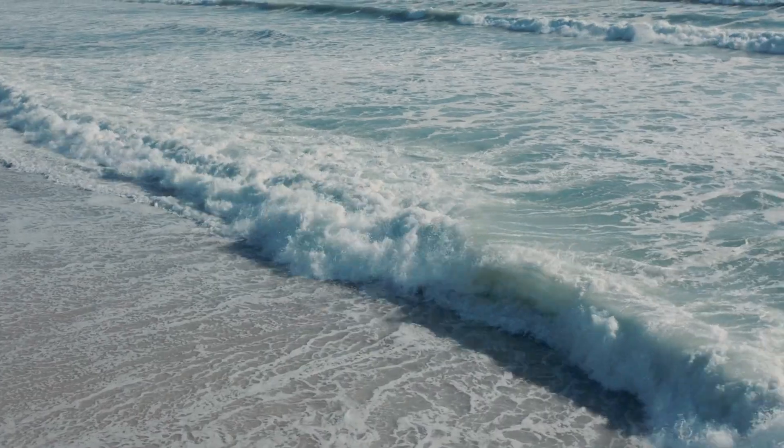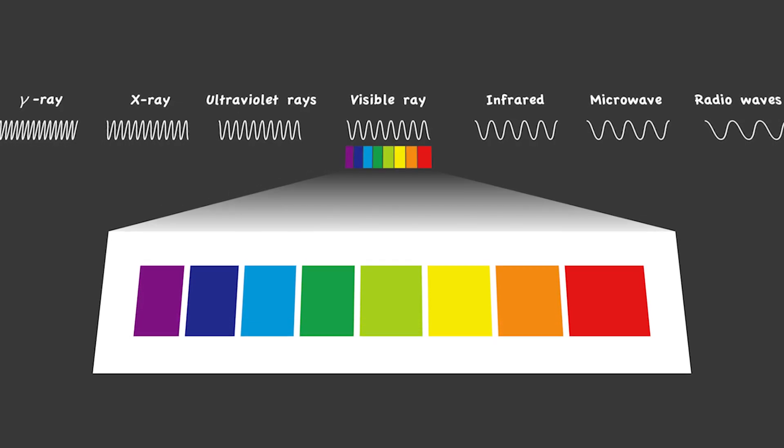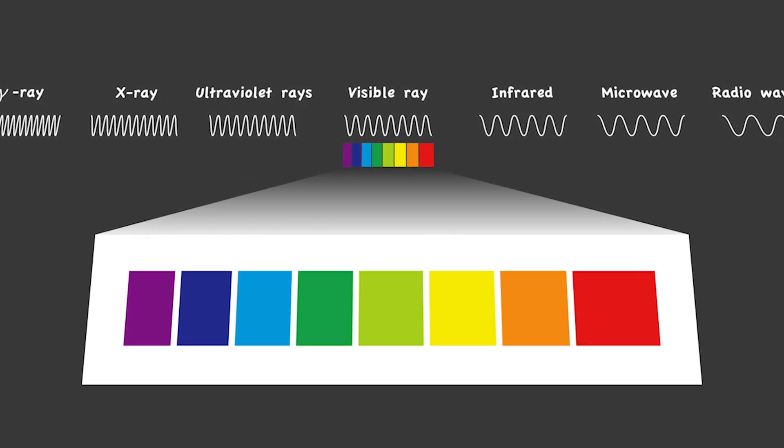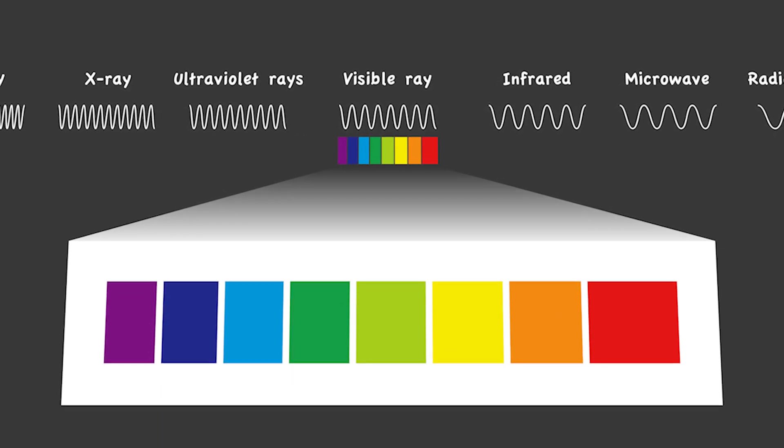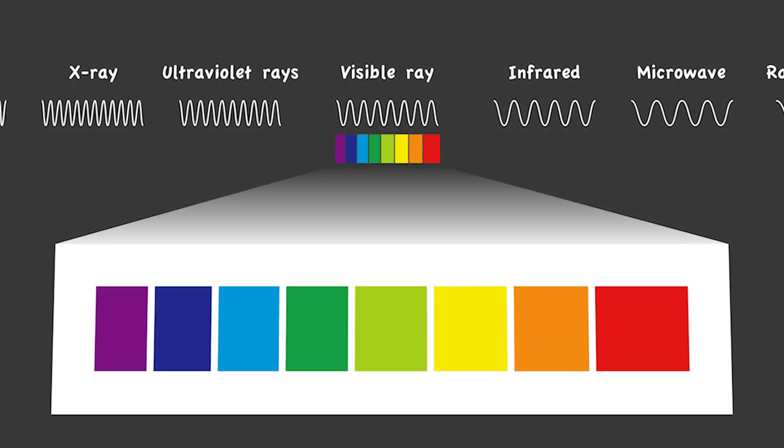Next up, nanometre wavelengths and PAR. Nanometres are units of measurement that describe the wavelength of light. Different wavelengths affect living organisms differently, so it's important to understand them when setting up an aquarium. In this context, the 400 to 700 nanometre range is considered the photosynthetically active radiation range, or PAR, because that's the range of light that plants use for photosynthesis. So PAR refers to the amount of light in the 400 to 700 nanometre range that plants actually need.